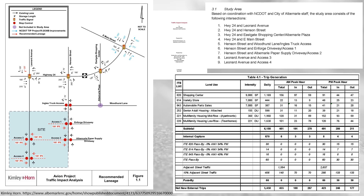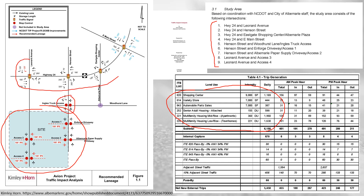Here's another example of a larger development with several different land use types of pretty substantial intensity, based on the square footage and number of dwelling units. The study specifically calls out the intersections to be included. On the site map, internal intersections are included, along with a nearby intersection and a series of signalized intersections. It also explicitly identifies one intersection shown in purple that is not included in the study area.